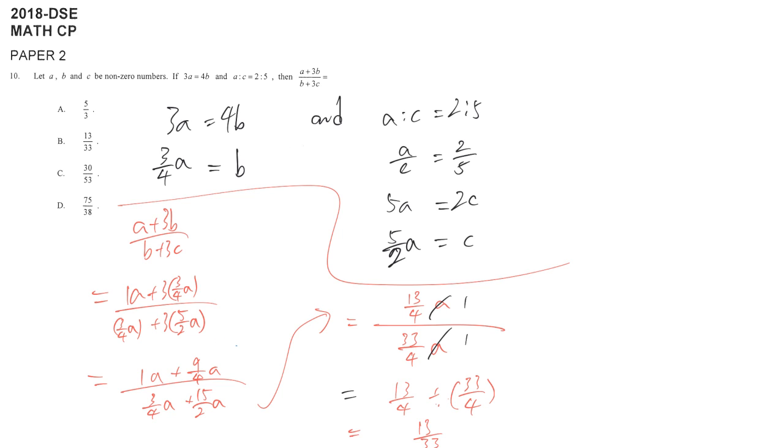But usually from here, I will handle the fraction like this: a plus 9 over 4a, and then divide it by 3 over 4a plus 15 over 2a. Usually if I handle this kind of fraction more than 2 layers, then I will both sides multiply some LCM of the denominator.